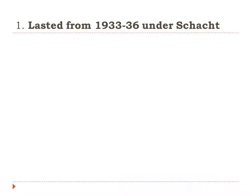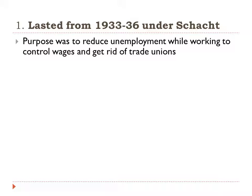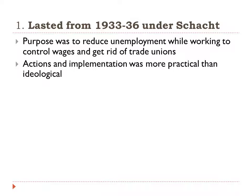The first stage of Nazi economic policy lasted from 1933 to 1936 under economic minister Schacht. The purpose of this was to reduce unemployment while working to control wages and get rid of trade unions. One of the first things you have to do when you establish a single party state is begin to address the situation that brought you into power — namely, the economic troubles of the Great Depression. Trade unions were largely on the left and could become a source of opposition to the government. The actions and implementation of this were more practical than ideological.